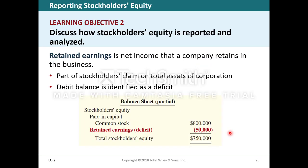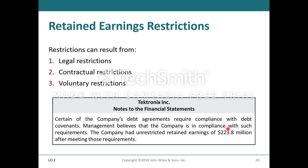Learning objective two: discuss how stockholders' equity is reported and analyzed. Retained earnings is net income that a company retains in the business and is part of stockholders' claim on assets of the corporation. A debit balance is identified as a deficit. Retained earnings restrictions can result from legal restrictions, contractual restrictions, or voluntary restrictions. For example, Texatronic Incorporated's notes to the financial statements state that the company had unrestricted retained earnings of $223.8 million after meeting certain debt covenant requirements.